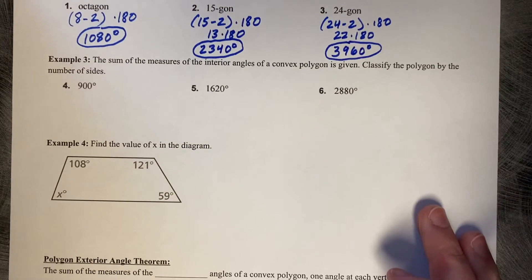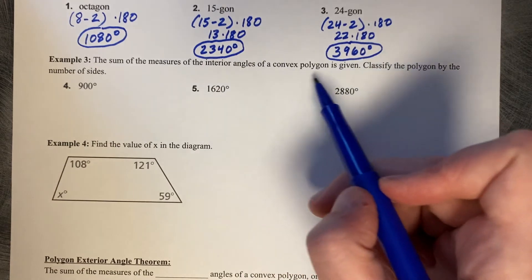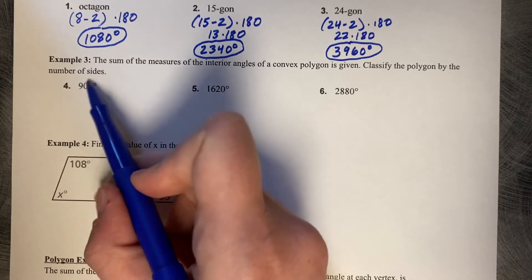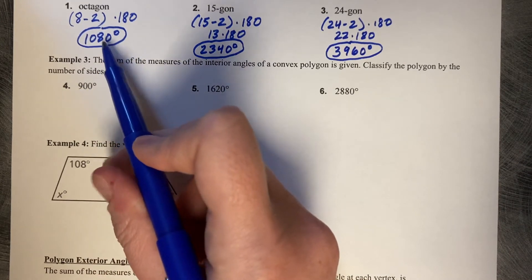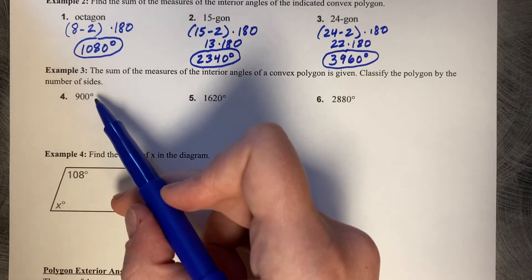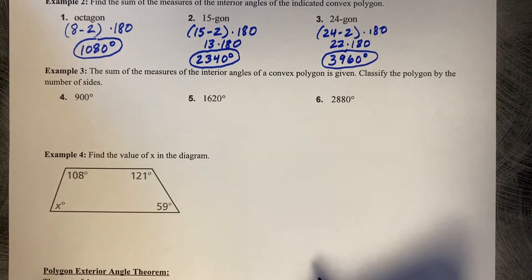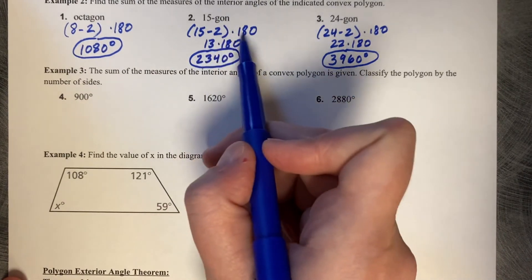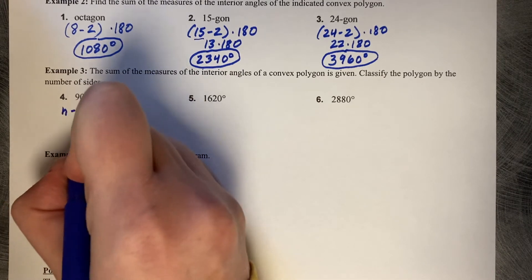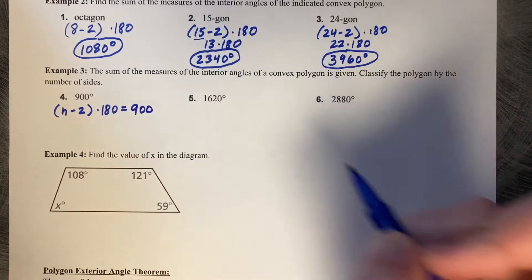Okay, let's try something new. The sum of the measures of the interior angles, so the total of a convex polygon is given. Classify the polygon by the number of sides. So if it's got 900 degrees on the interior, which polygon has the sum of 900 degrees? Of course, you could guess and check. Or you can use your pattern to work backwards for your number of sides. So you leave it as a variable, n minus two times 180, that's the pattern, is equal to a sum of 900.